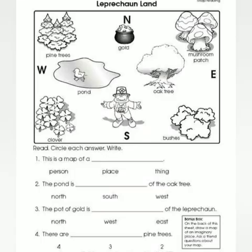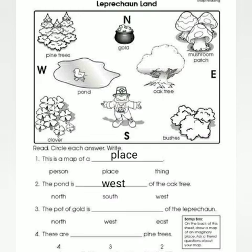So let's take a look at another worksheet. This one's a little easier. We have north, east, south and west marked on the map. Now we're going to read the questions and fill in the answers. Question one: this is a map of a person, place or thing. A place — that's right, Year 2. Next question: the pond is north, south or west of the oak tree. Can we see the pond? Across from the pond is the oak tree. That's right — the pond is west of the oak tree.